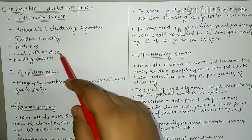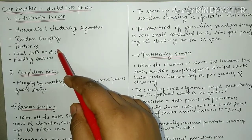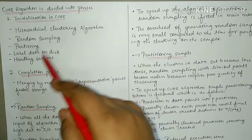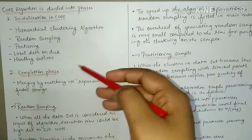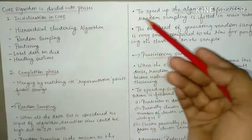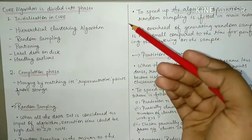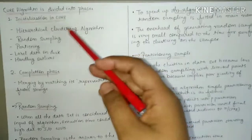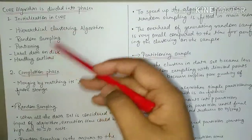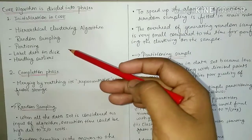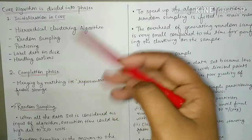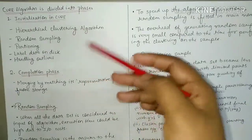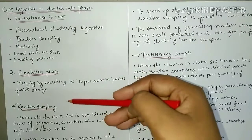Then, the last step would be Label Data on Disk — आपको data या cluster को label करना है, and then store it on disk. So these are the five steps in the Initialization phase. इनको हम detail में आगे वाले वीडियो में पढ़ेंगे.